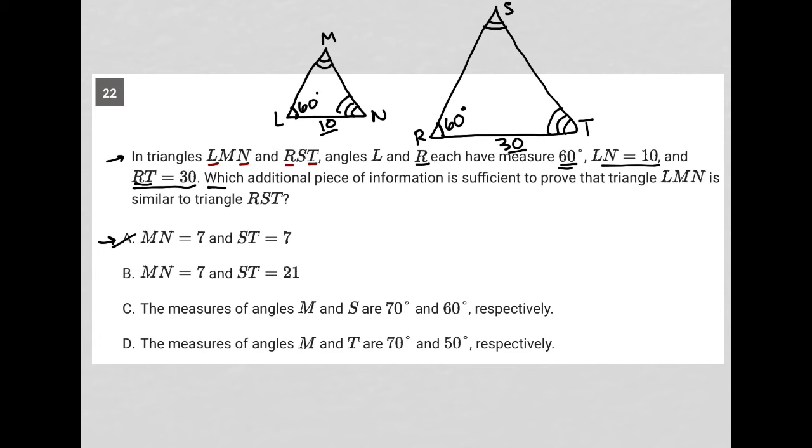Choice B, if MN were 7 and ST were 21. Well, that definitely fits the bill in terms of keeping triangle RST as three times larger. But it doesn't address the fact that we have to have these corresponding angles congruent to each other.